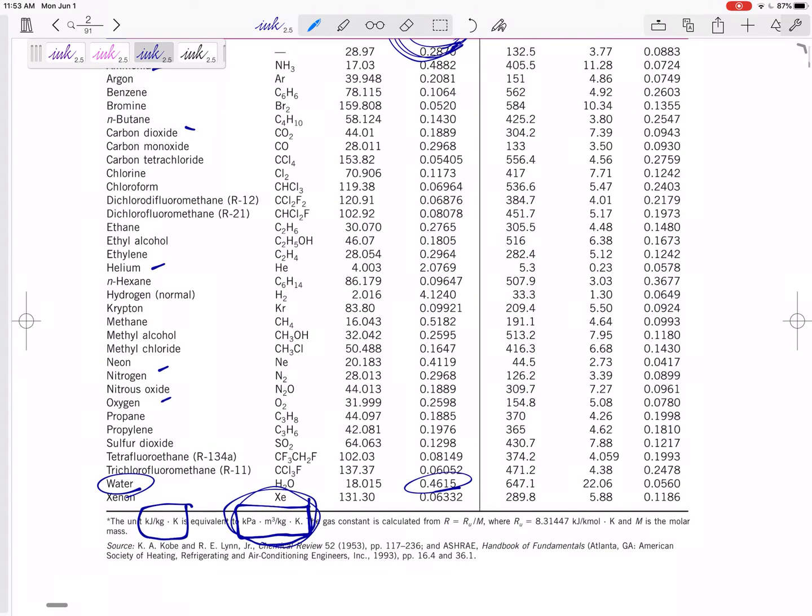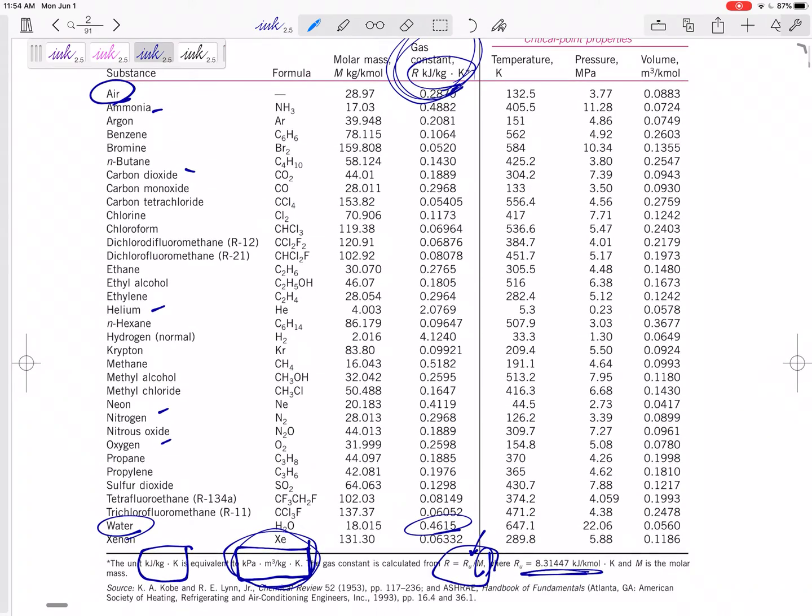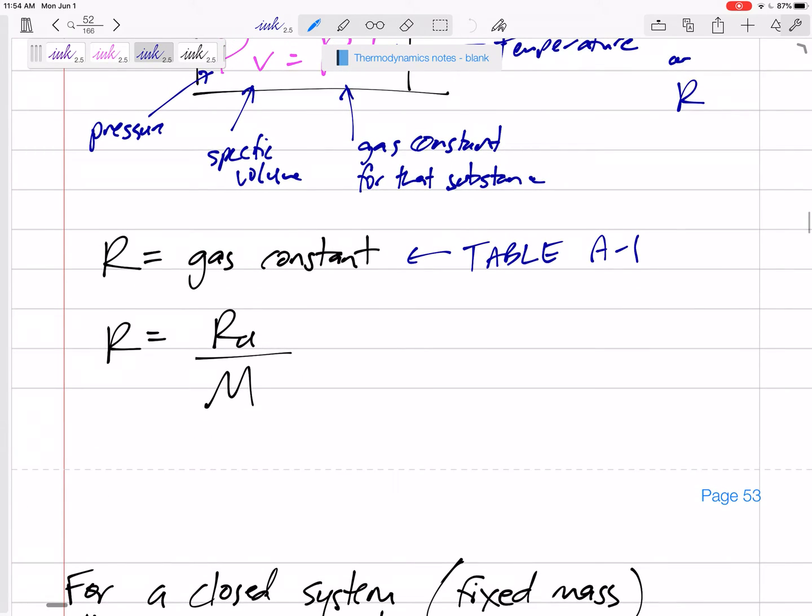All right. R, here we go. R is the universal gas constant divided by the molar mass, where R universal is 8.31447, and M is the molar mass. Let's write that in our notes. Yeah, there we go. R is also the universal gas constant divided by the molar mass for that substance. But we won't have to use this if we just look at table A-1, and get that gas constant for that substance.